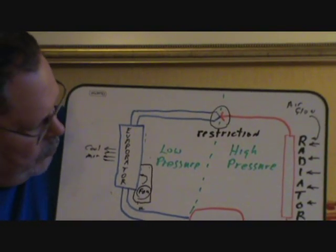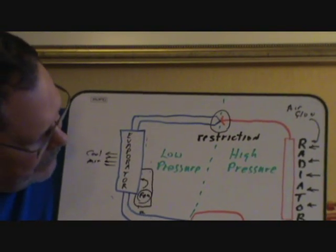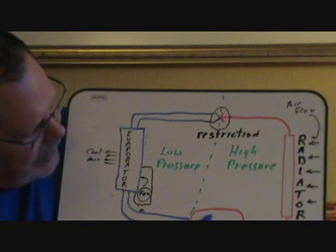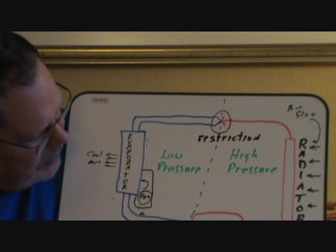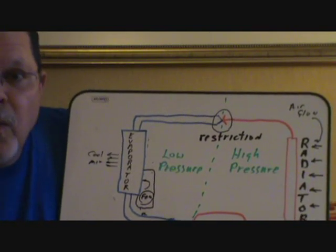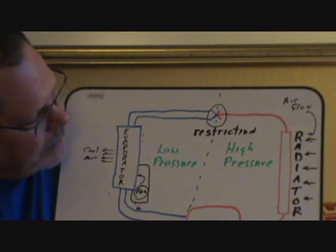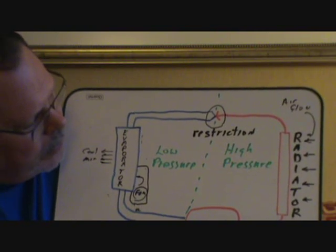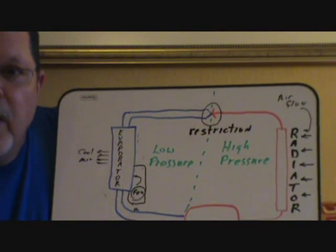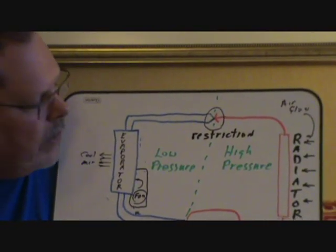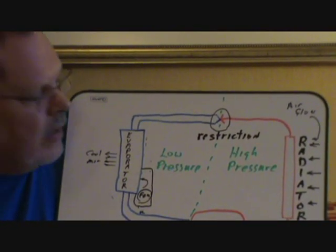This is the compressor. So when you start the cycle, the AC compressor is pumping. It sucks in gas, a low pressure gas here. And what comes out of here is a high pressure gas. The pressure could be anywhere up like 150 all the way up to like almost 300 psi.